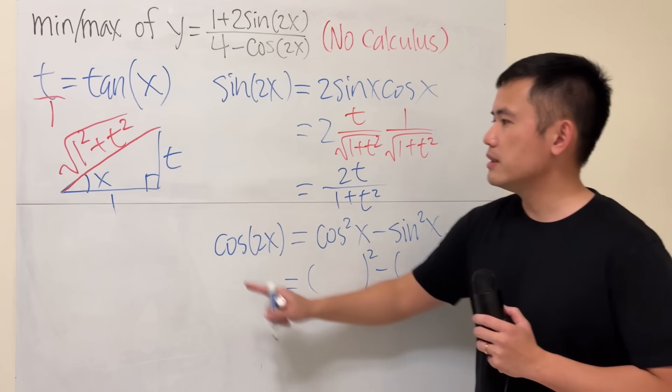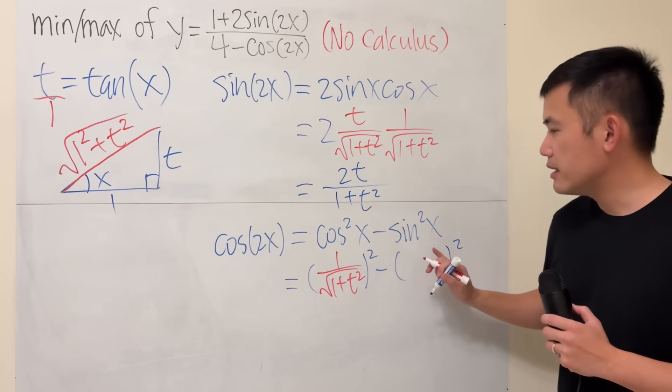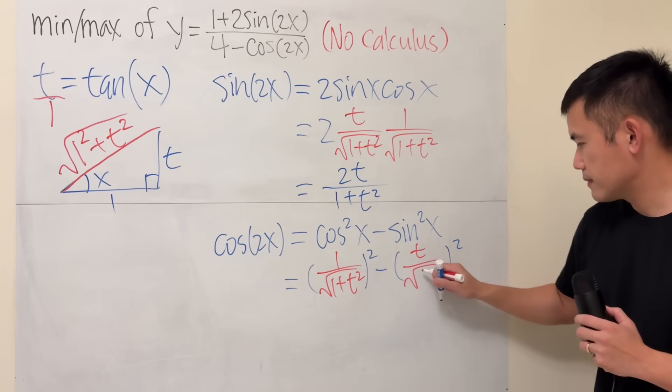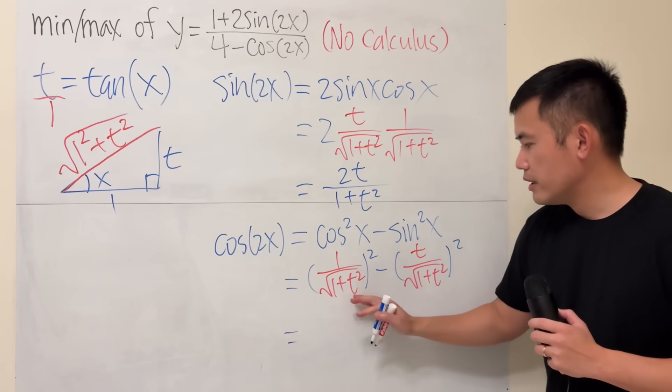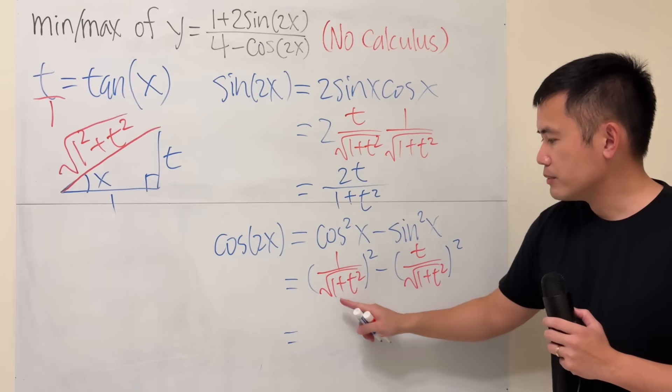This means we have cosine x squared minus sine x squared. So, this right here is 1 over that. And then this right here is t over that.